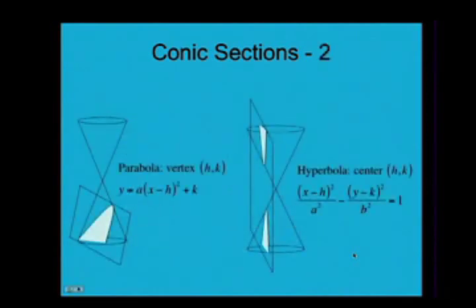Then we have two other shapes that come from the cone. We have a parabola which in this case the plane intersects in such a way that it does not pass through both sides of your cone. The hyperbola has a plane which lies parallel to the axis of the cone so that it intersects both the upper and lower portions of the cone creating what we call a hyperbola.